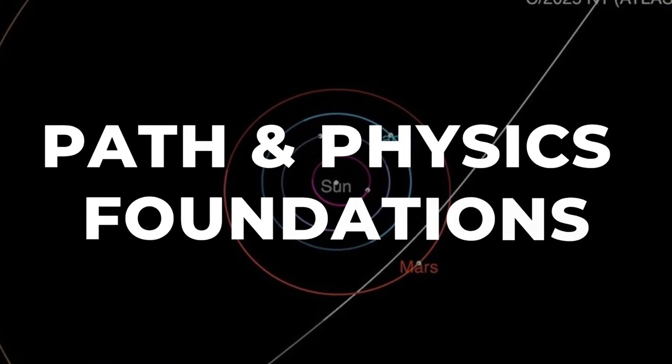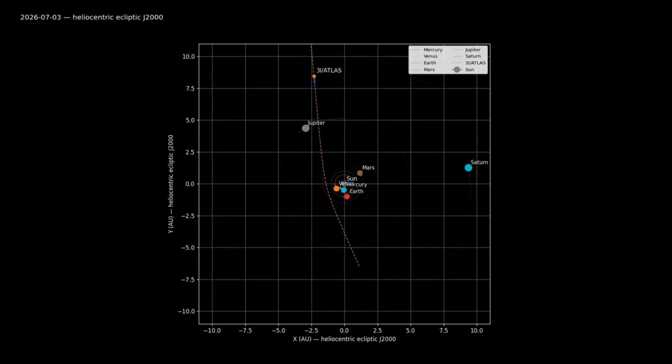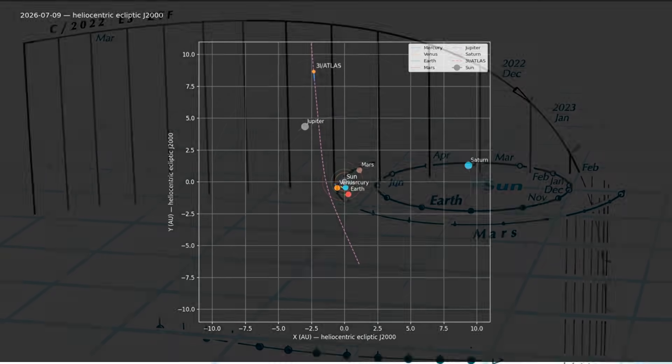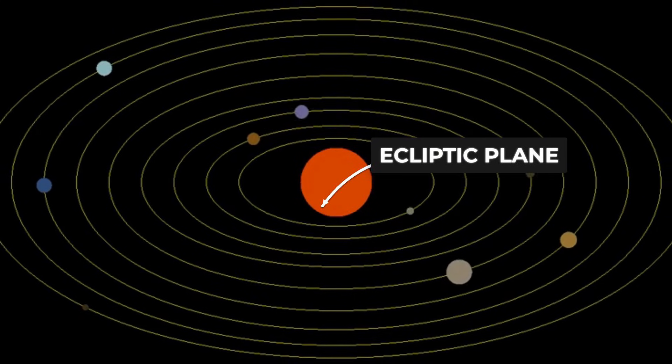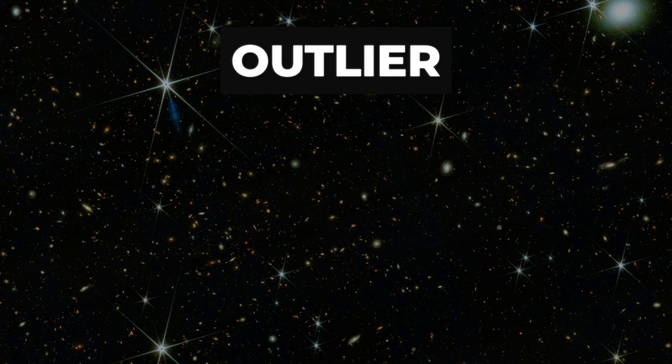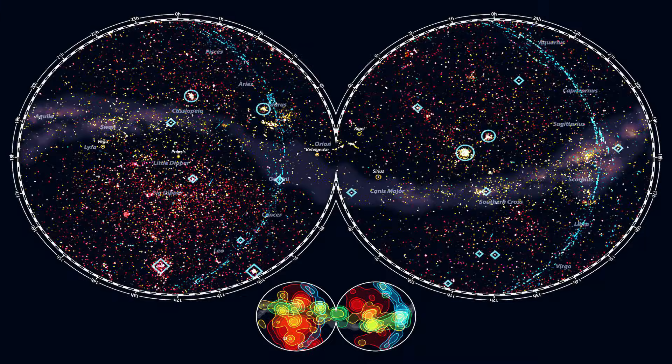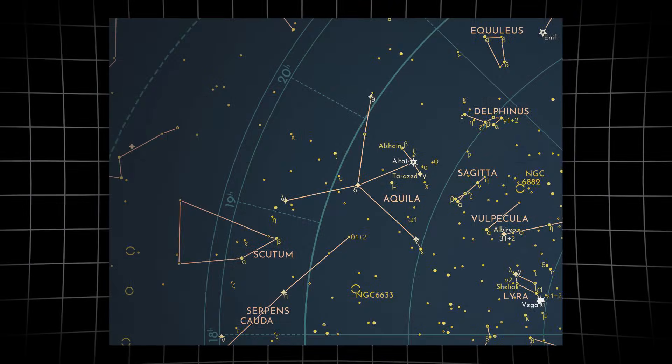3i/Atlas hurtles toward the Sun at nearly 55 kilometers per second, threading a path that defies the odds. Instead of plunging in from a steep, random angle, it skims the solar system's plane, tilted just 5 degrees from the ecliptic, the invisible disk where planets orbit. For a visitor from interstellar space, this is a statistical outlier. Random arrivals should scatter across the sky, most missing the ecliptic by wide margins. Yet here, the trajectory nearly overlays the planetary lanes, as if mapped to blend in with local traffic.